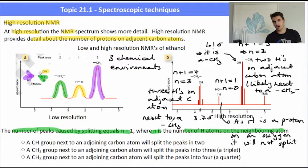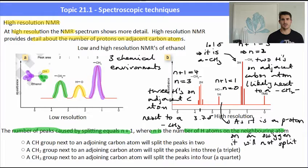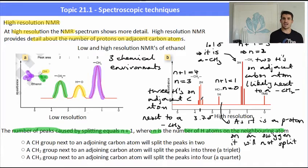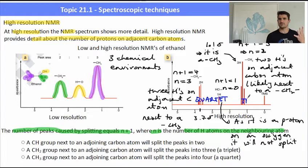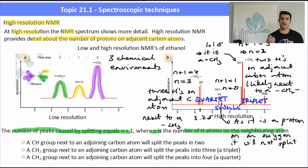This set of peaks integrates for two hydrogens, so it's very likely to be the CH2 we've talked about. We're building pieces of the puzzle: CH2, CH3, and OH. In terms of naming: four peaks is a quartet, one peak is a singlet, two peaks is a doublet, and three is a triplet. You must refer to them by these names.